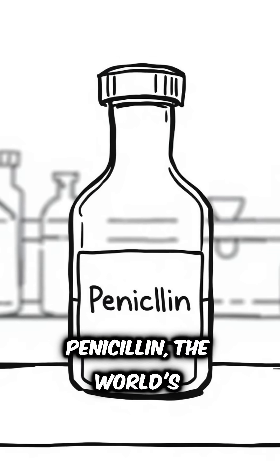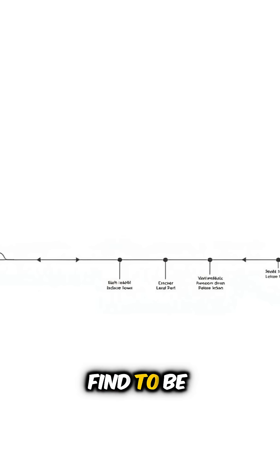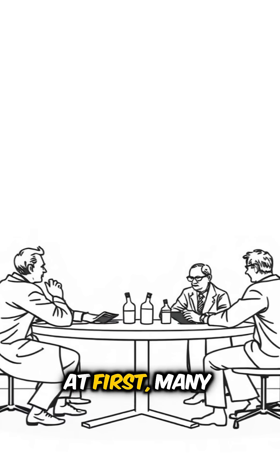Fleming had discovered penicillin, the world's first true antibiotic. But it took years for his find to be understood and applied. At first, many were skeptical.